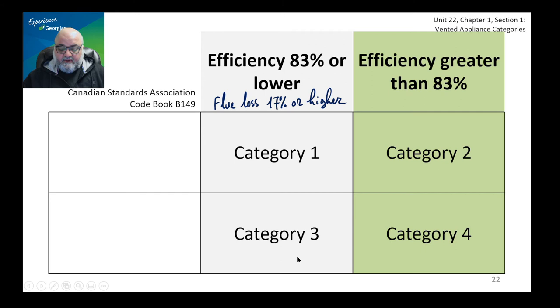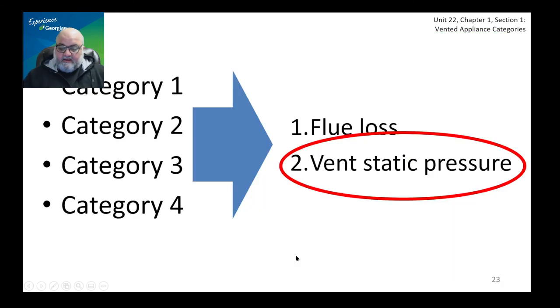So efficiency of 83% or lower is category 1 or 3, because that equals flue loss of 17% or higher. If the appliance has an efficiency greater than 83%, it means flue loss is less than 17% — that would be category 2 or 4. The question then becomes: how do we distinguish between category 1 and category 3, or between category 2 and 4? That brings us to vent static pressure.